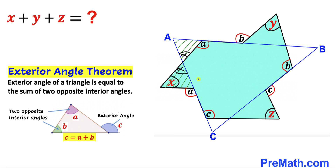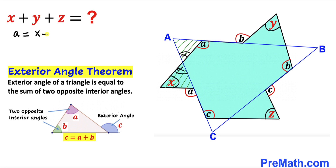The exterior angle of a triangle is equal to the sum of two opposite interior angles. This is our exterior angle, whereas these are our opposite interior angles, such that c equals angle a plus angle b. Now let's focus on this triangle — this is our exterior angle and these are the two opposite interior angles, so we can write angle a equals angle x plus alpha.